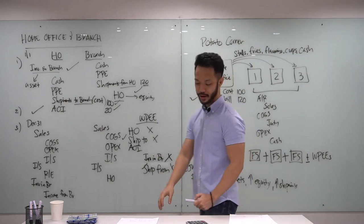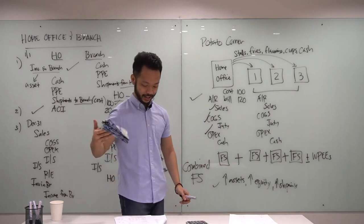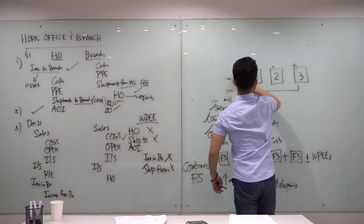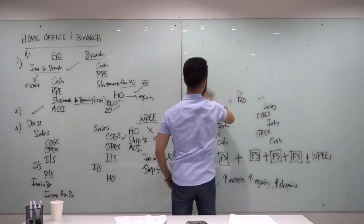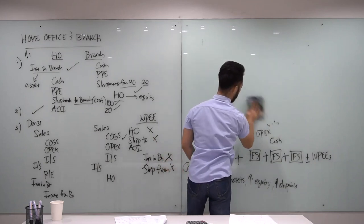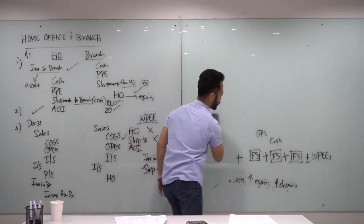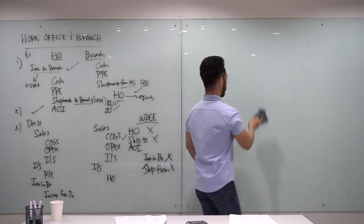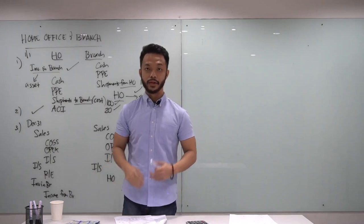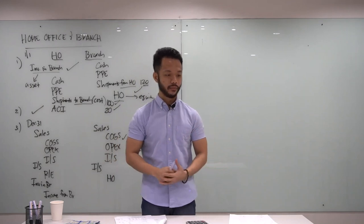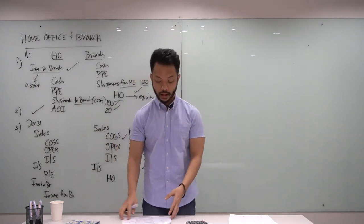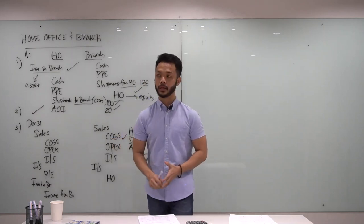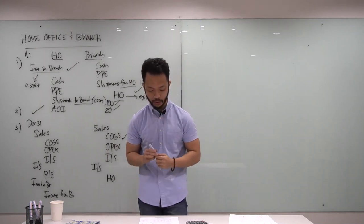That's the overview of our lesson for today. Knowing this, let's go to our exercises. In home office and branch, I will teach you a 'magic table' similar to what we use in LTCC. Once you use this table, you can answer any question in home office and branch. Let's go to Problem Number One.